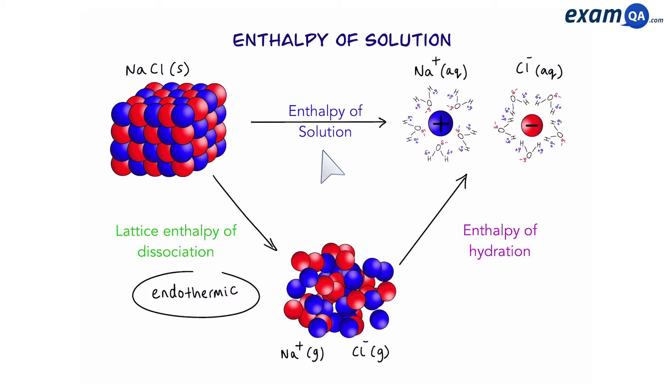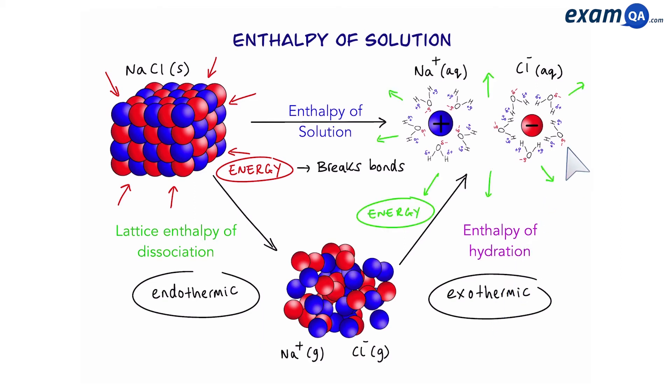Now enthalpy of dissociation is always endothermic because it takes energy in to break the bonds and turn them from a solid into gaseous ions. And enthalpy of hydration is always exothermic because energy is given out when the ions and the water molecules form bonds.